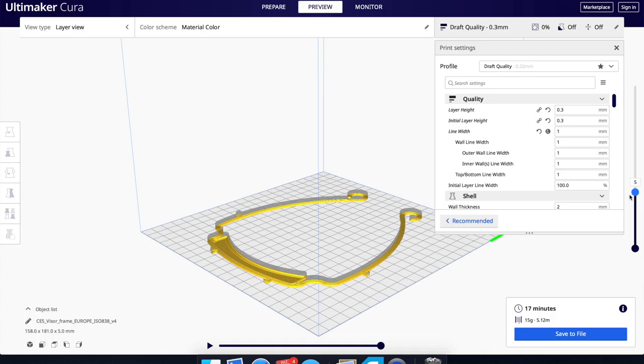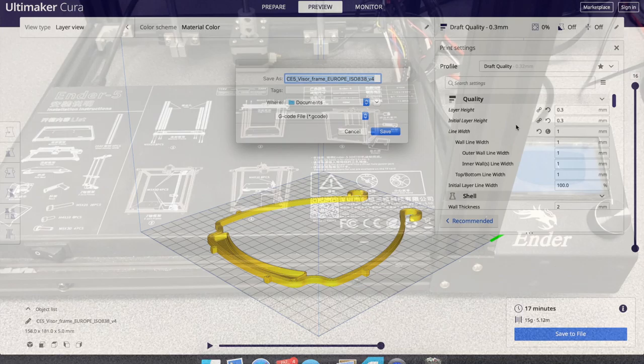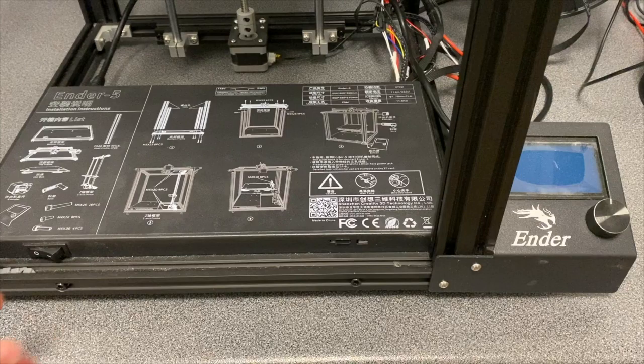First, a 3D model of the face shield frame is uploaded into slicing software. This program translates the 3D model into a set of directional instructions which allows the printer to create the face shield. The file is then exported onto a micro SD card. This is inserted into the printer.